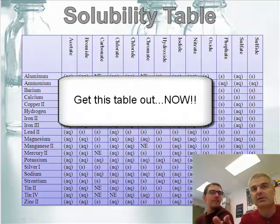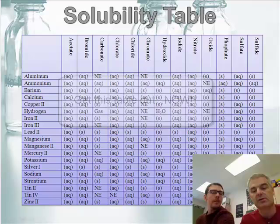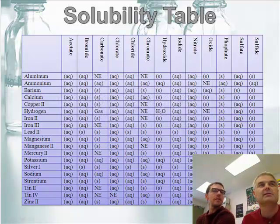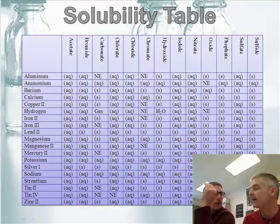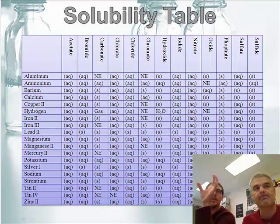You can print this up, I don't know, whatever. But this is a very important table that you're going to want to use as we work through the whole replacement reactions. Yeah, so in the single replacement reactions, you use the activity series of metals table, and the double replacements, you use the solubility table.